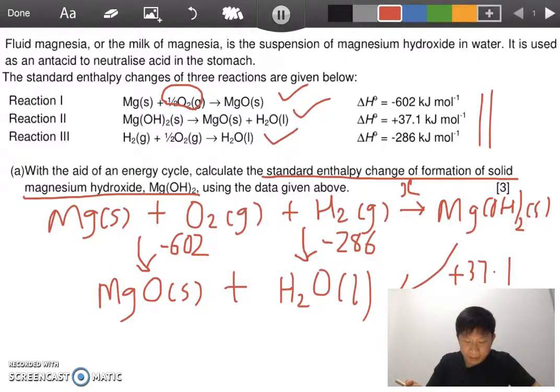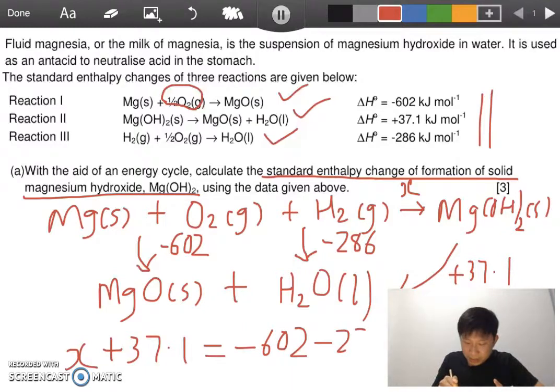Once you piece all together we use Hess's Law. Hess's Law means clockwise equals to anticlockwise. So for this question over here, clockwise x plus 37.1 will be equals to minus 602 and minus 286. Once you get this you can just solve for x and that is your final answer.